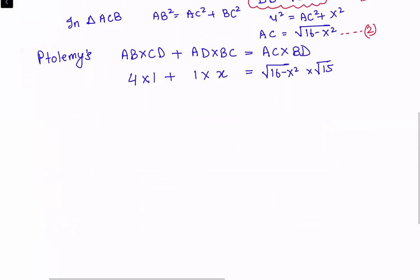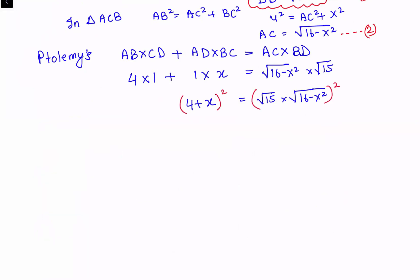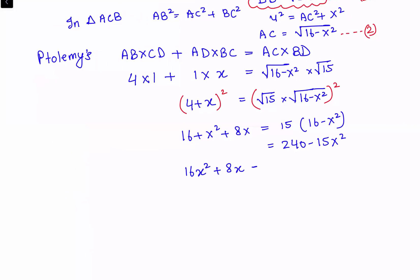Solving this equation: 4 + X = √15 × √(16 − X²). Taking squares on both sides, we get 16 + X² + 8X = 15 × (16 − X²), which is 240 − 15X². Simplifying and taking everything to the left-hand side, we get 16X² + 8X − 224 = 0.